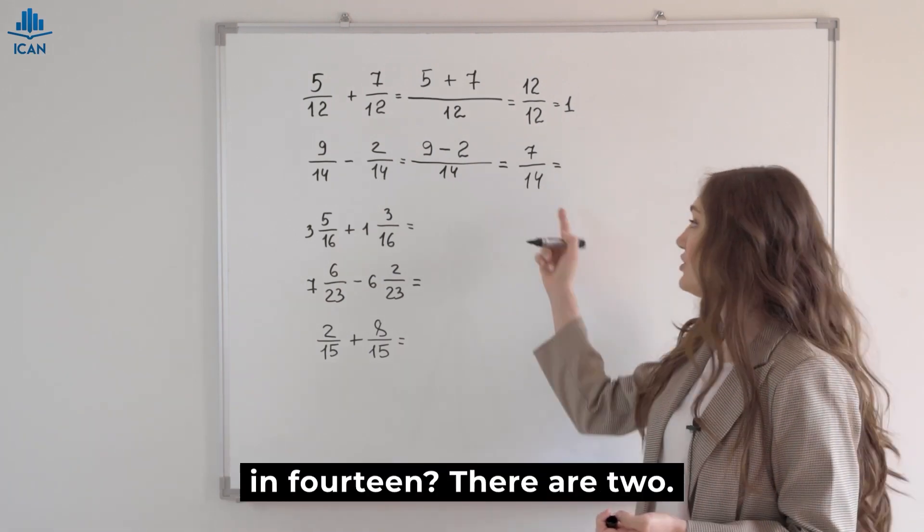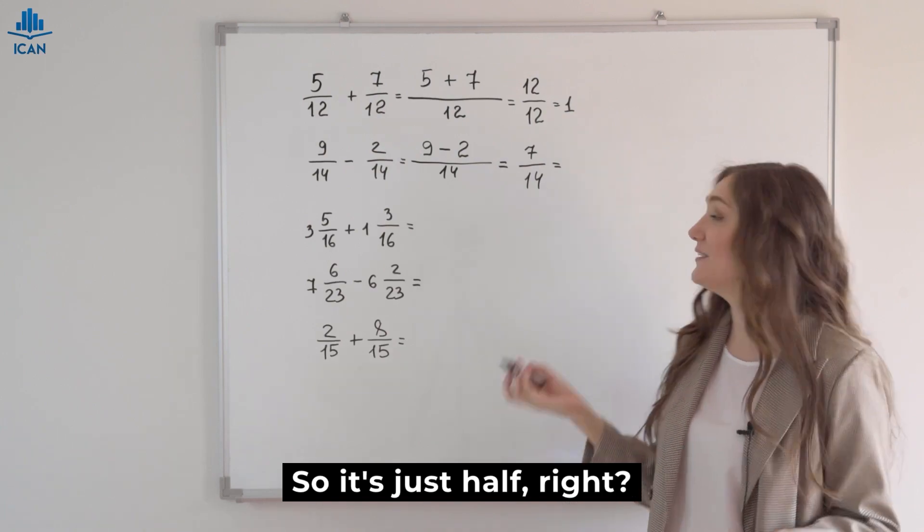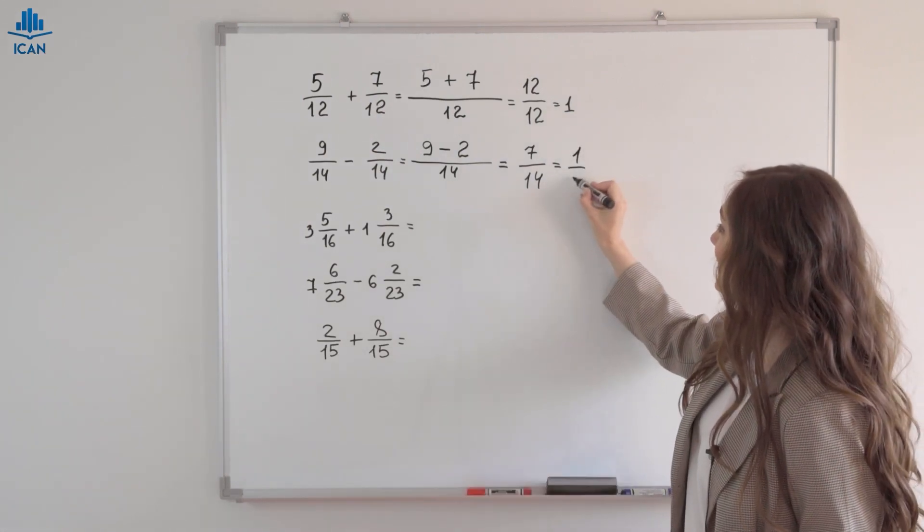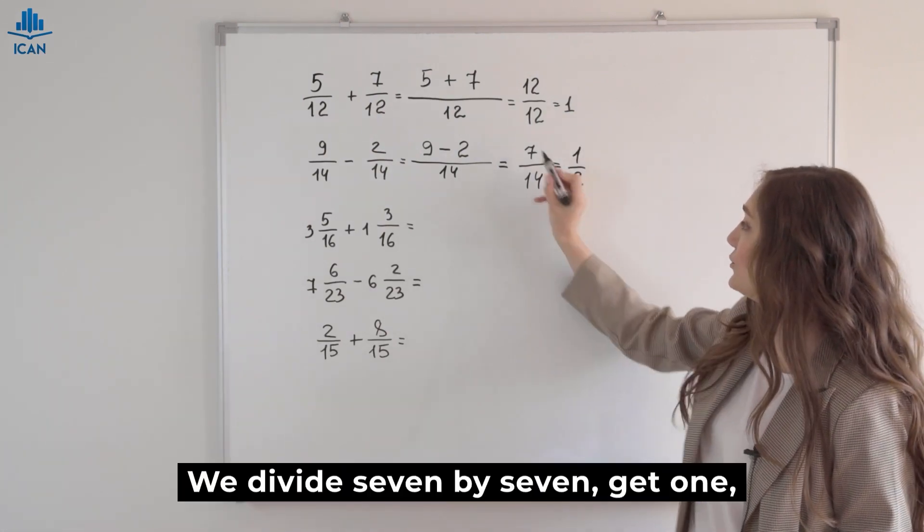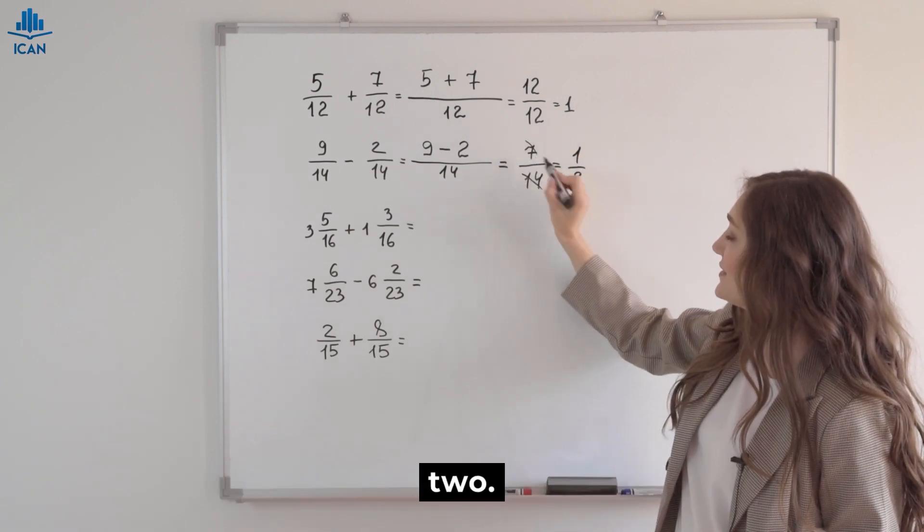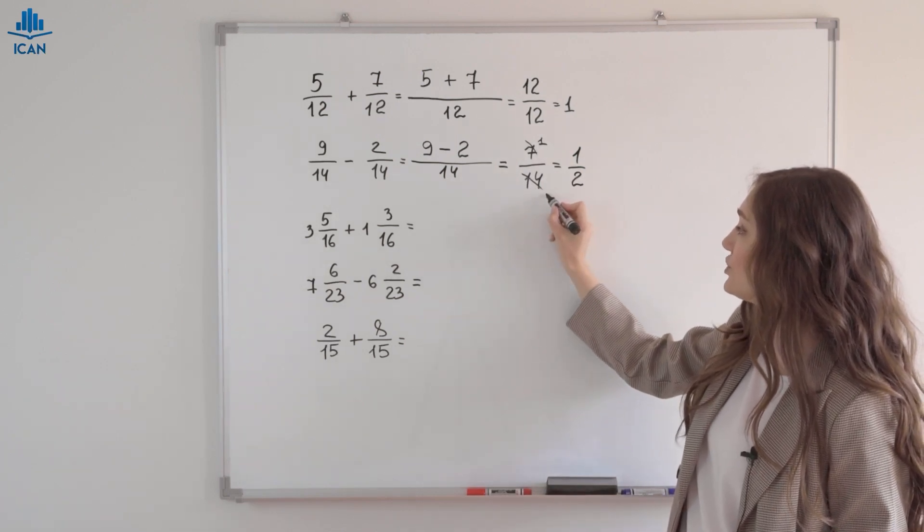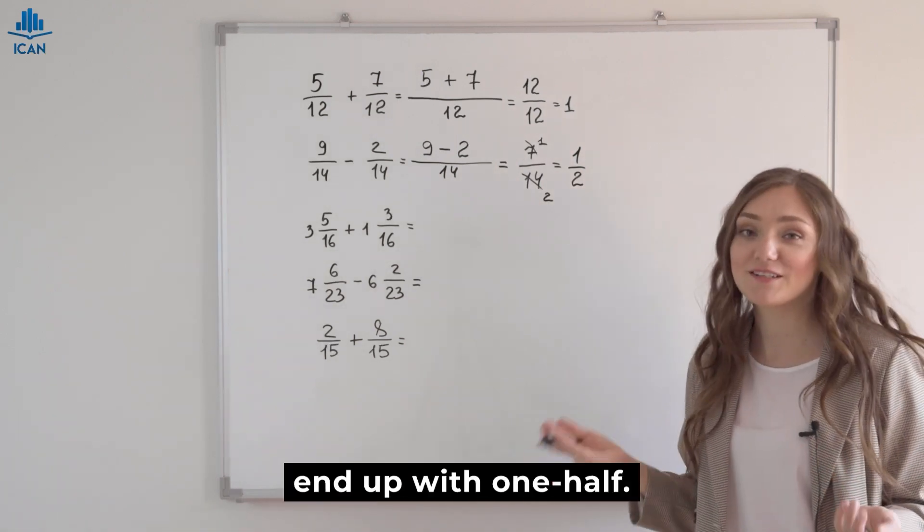What's 7 fourteenths? How many 7s in 14? There are 2. So it's just half, right? That means one half. We divide 7 by 7, get 1. And 14 by 7, get 2. So we end up with one half.